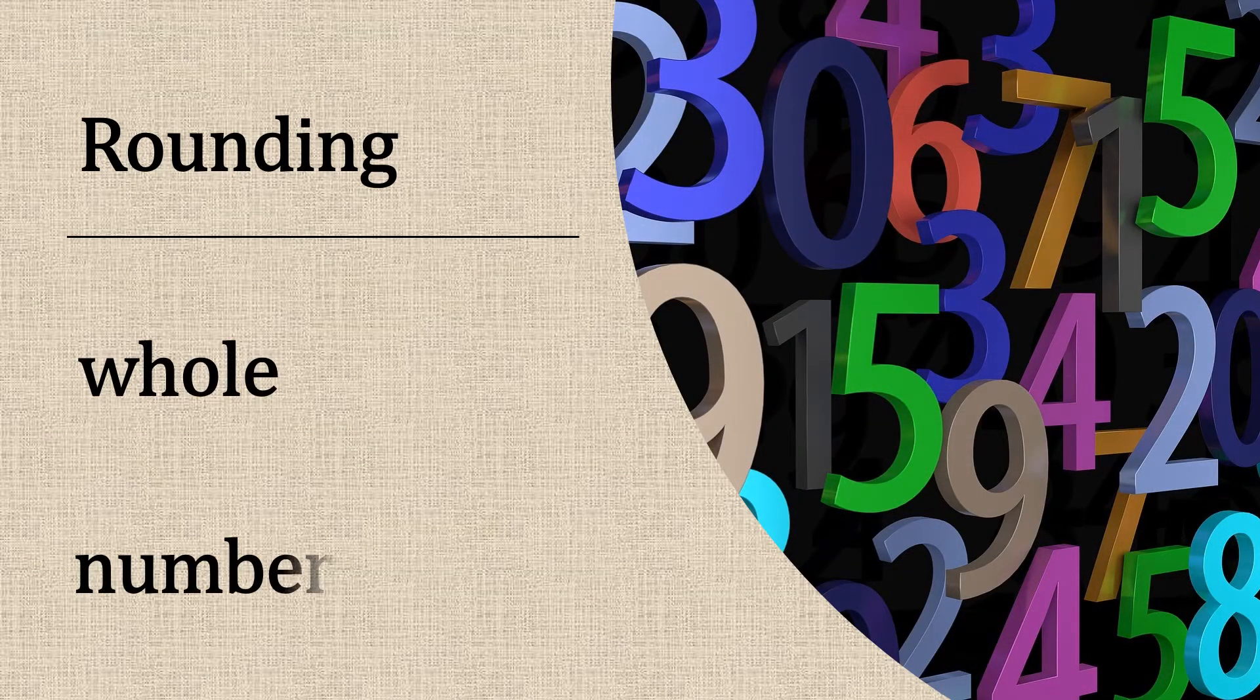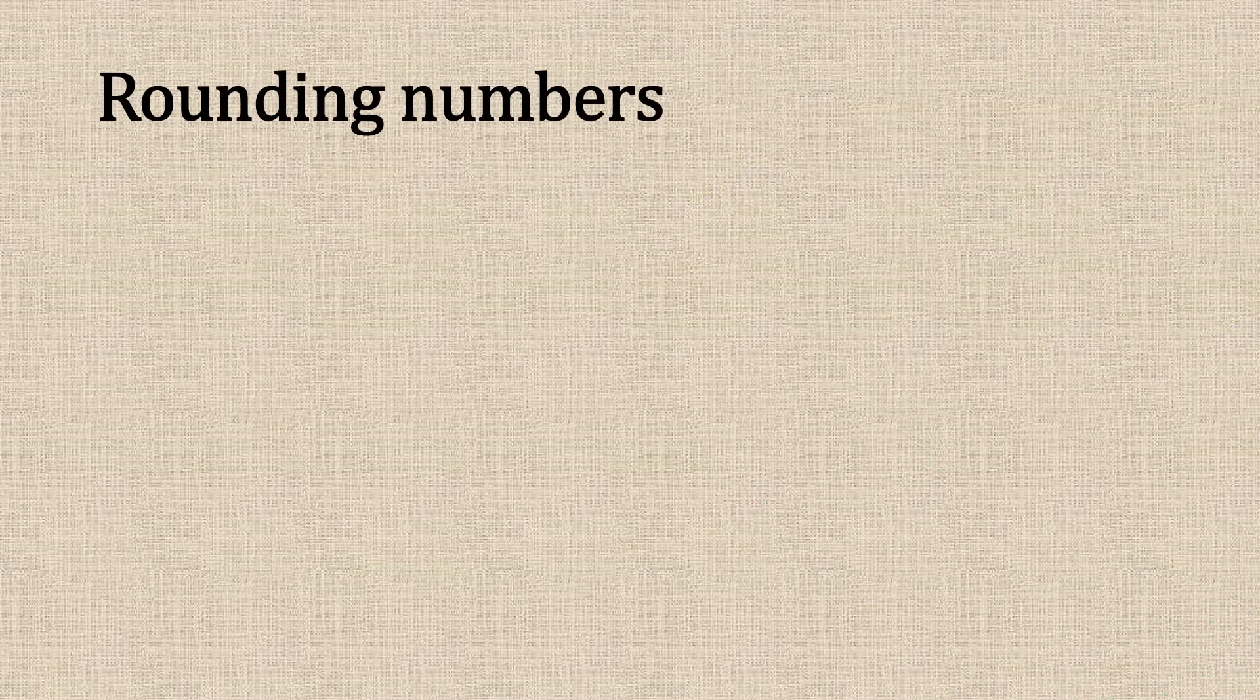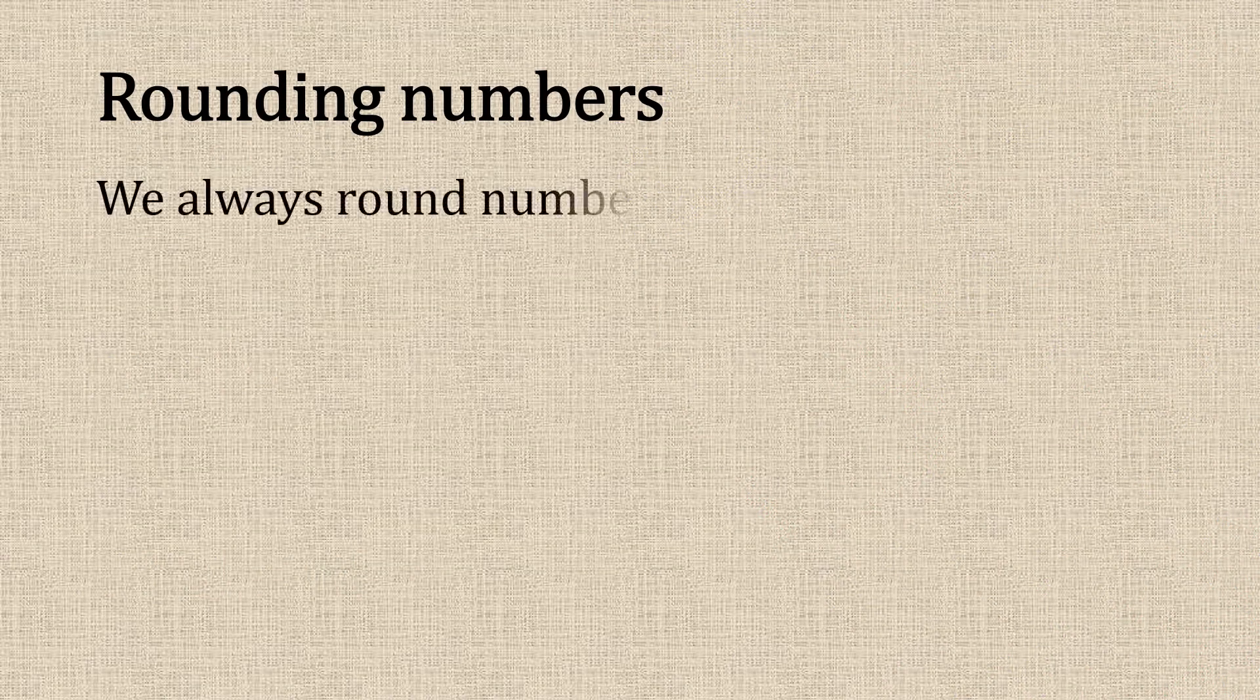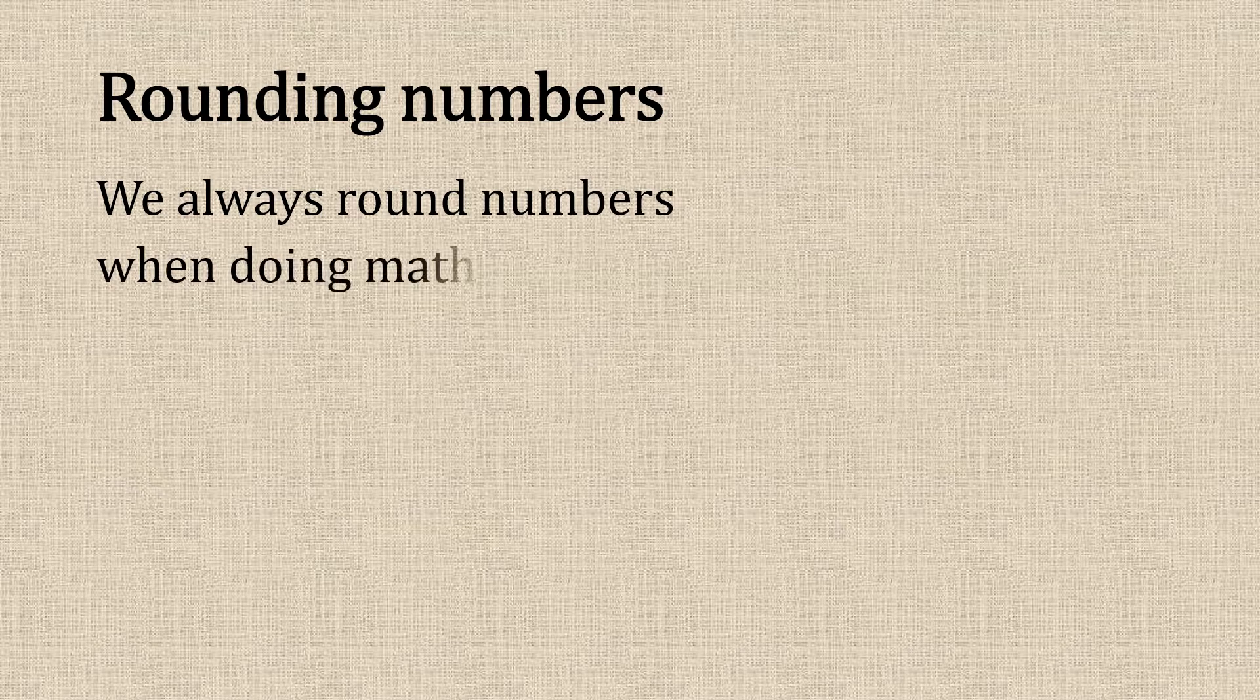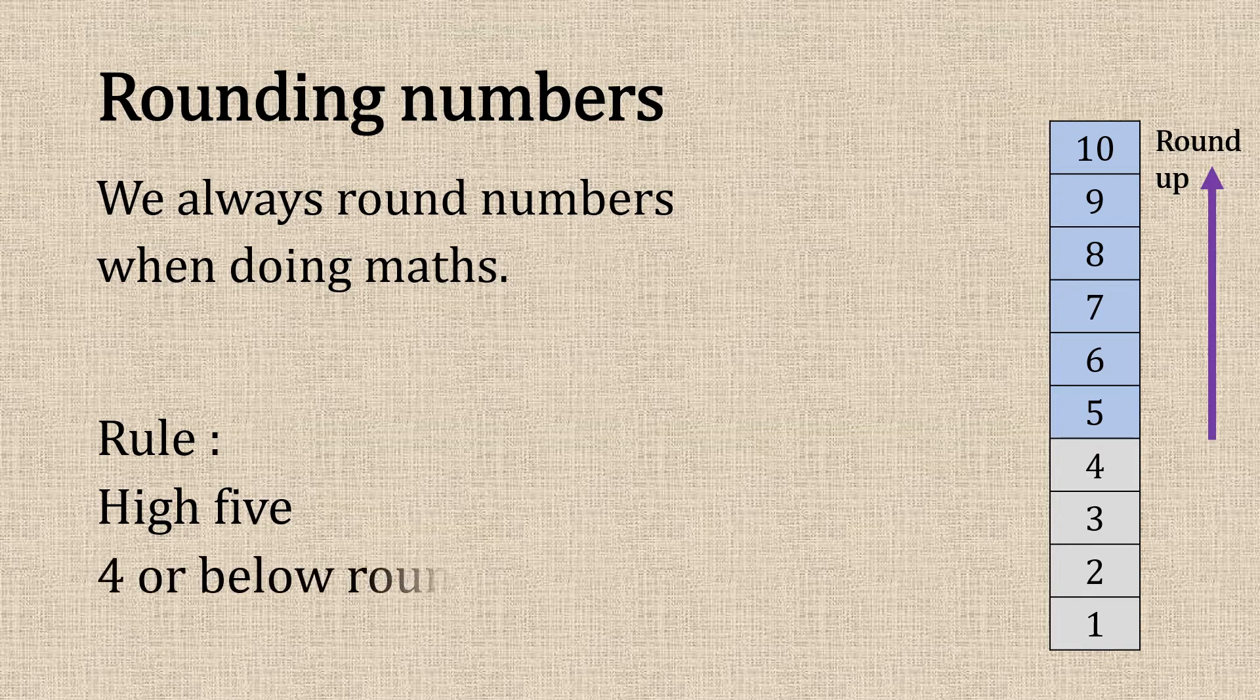Hi, we're going to look at rounding whole numbers. We always round numbers when we're doing maths. Remember our rule: if it's higher than a five, we round up, or if it's four or below, we round down to zero.